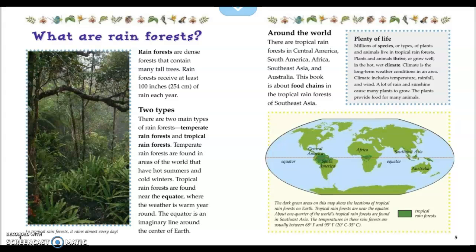Here we have a map. The dark green areas on this map show the locations of tropical rainforests on Earth. Tropical rainforests are near the equator. About one-quarter of the world's tropical rainforests are found in Southeast Asia. The temperatures in these rainforests are usually between 68 and 98 degrees Fahrenheit, which is between 20 and 35 degrees Celsius.